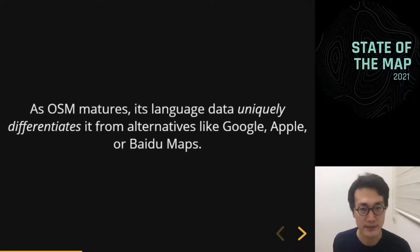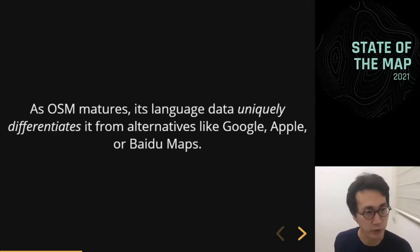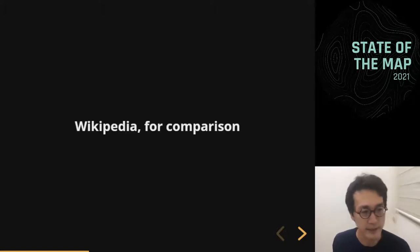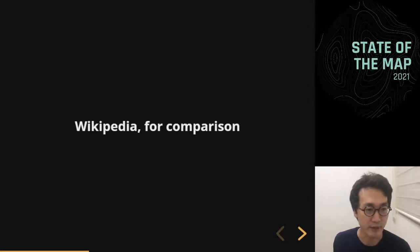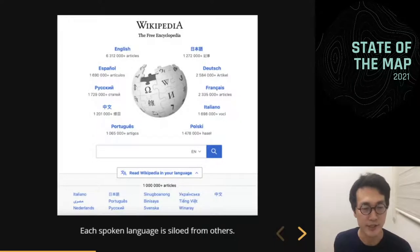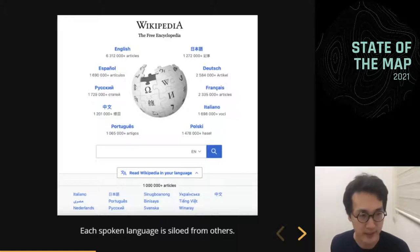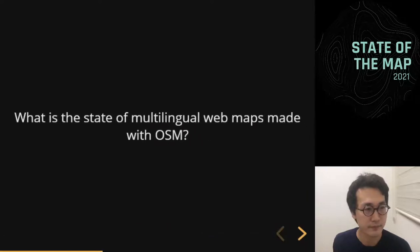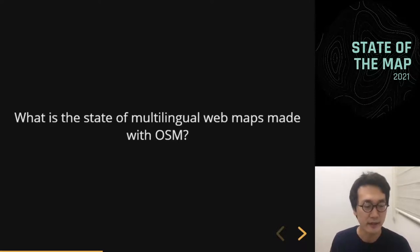As OSM matures, its language data uniquely differentiates it from major commercial map platforms like Google, Apple, or Baidu. For comparison, OpenStreetMap gets compared to Wikipedia a lot, but Wikipedia takes a very different approach — each language is siloed off from the others. There's an English Wikipedia, a Spanish Wikipedia, a Japanese Wikipedia, and those are all totally separate. For OpenStreetMap, because it combines all languages into one unified data set, showing text in different or multiple languages is a unique challenge.